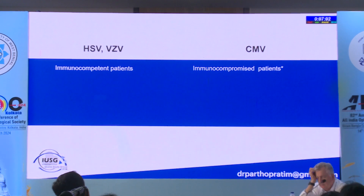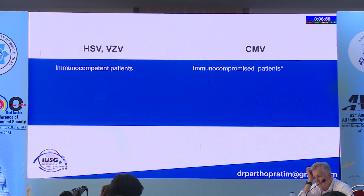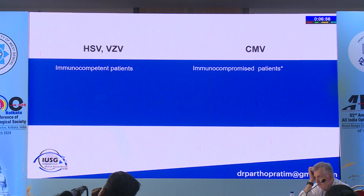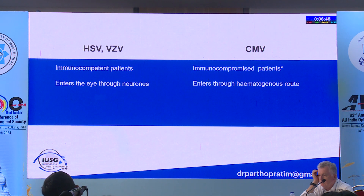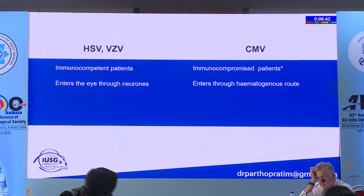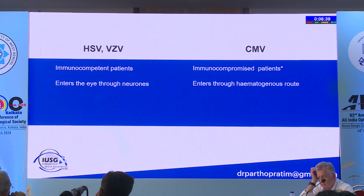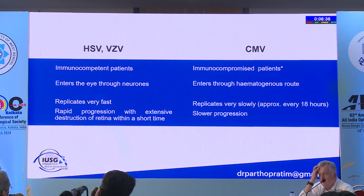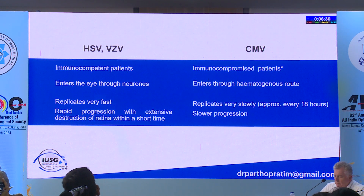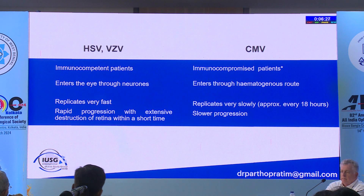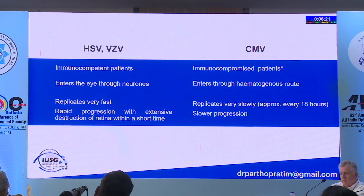The broad differentiation between HSV/VZV infection and CMV: HSV and VZV involve immunocompetent patients, while CMV is most commonly seen in immunocompromised patients, though immunocompetent cases do occur. HSV and VZV enter the eye through neurons, whereas CMV's primary mode is hematogenous spread. HSV and VZV replicate very fast and can destroy the retina quickly if antivirals are not started, whereas CMV replicates slowly — approximately every 18 hours — resulting in relatively slower progression.